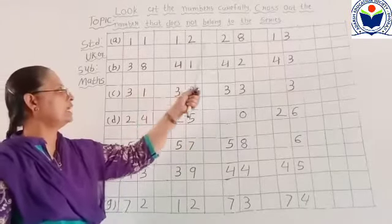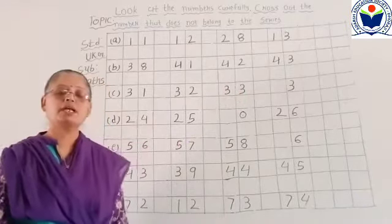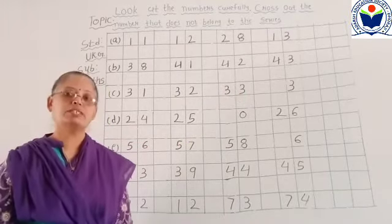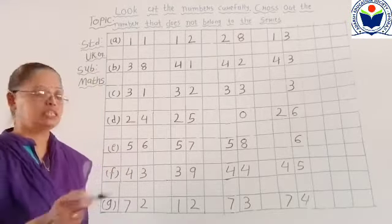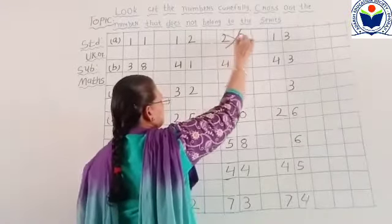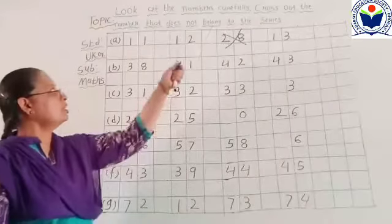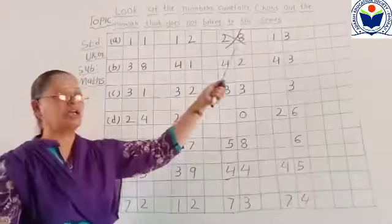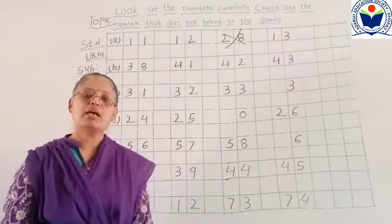11, 12, 28, 30. So which number will you cross? Very good. 20 — this number you will cross. Does not belong. You will cross it out.